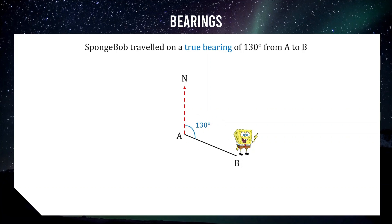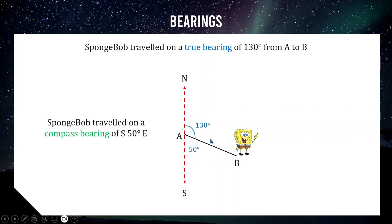That's called a true bearing — the most common type given in the HSC. The other type is called compass bearings. To find a compass bearing, we extend the north line to create a north-south line, which is 180 degrees. If this is 130 up here, the gap must be 50, because 50 plus 130 equals 180. So this direction from A to B can also be described as South 50 degrees East — starting from south and rotating 50 degrees towards east.